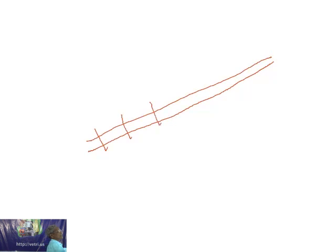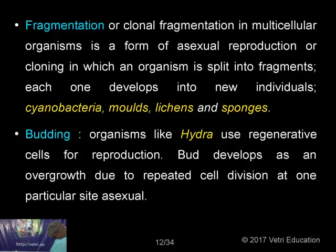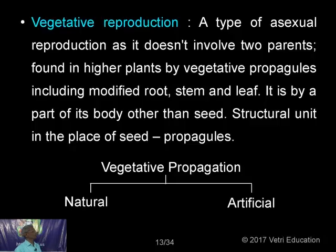For example, if this is a filament of alga and it gets divided by accident into four or five bits, each one is capable of giving rise to a new plant. So fragmentation is a very common type of reproduction in lower organisms. Budding, as I already explained, takes place in Hydra.